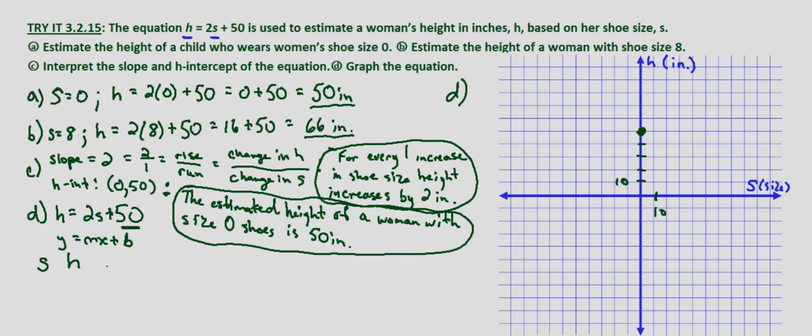Well h equals 2 times 20 plus 50, which equals 90 inches. Actually I did this backwards because of our input and output, let me switch this table around real quick. s is our input, h is our output, so our point would be s, h. So we're looking at s equals 20, so h equals 2 times 20 plus 50 which we determined was 90 inches. So our point would be 20, 90.